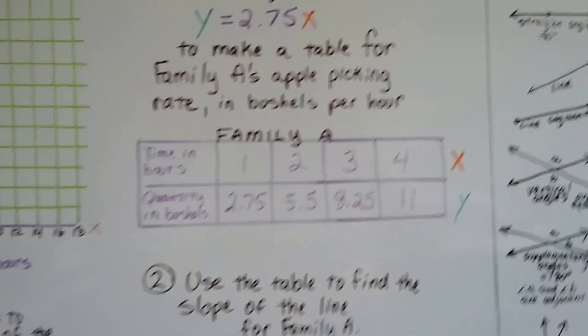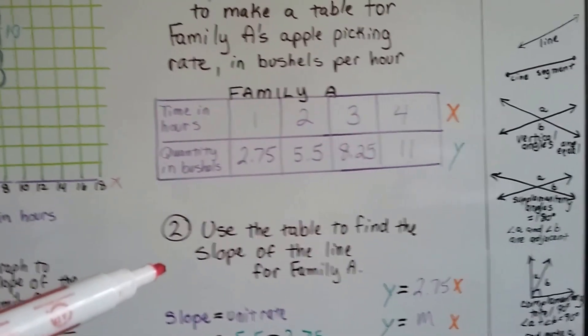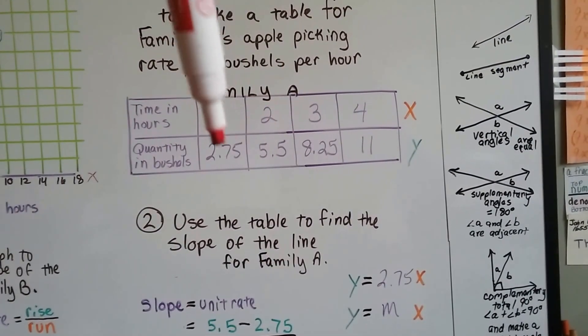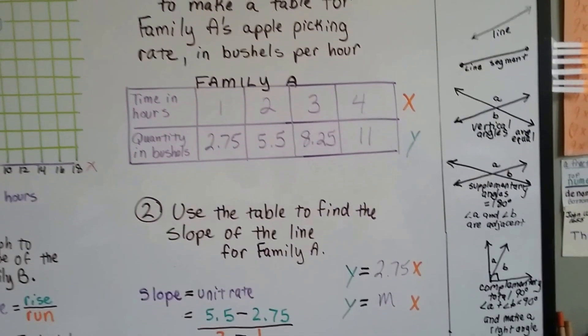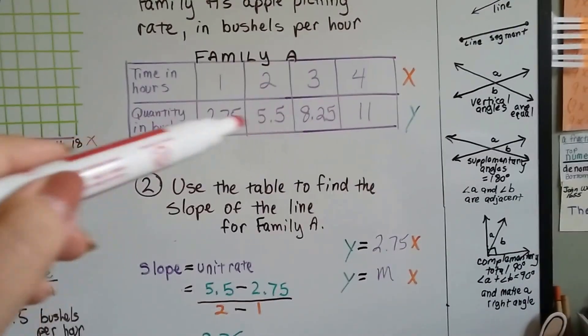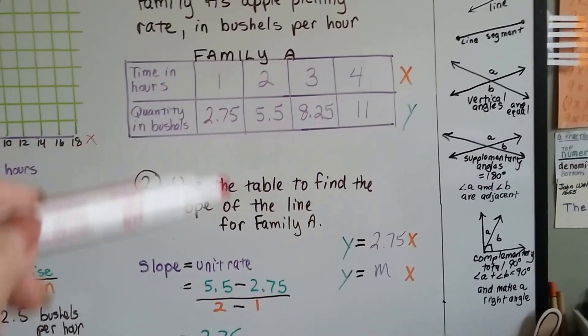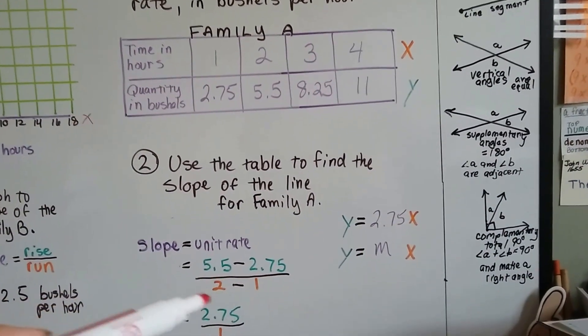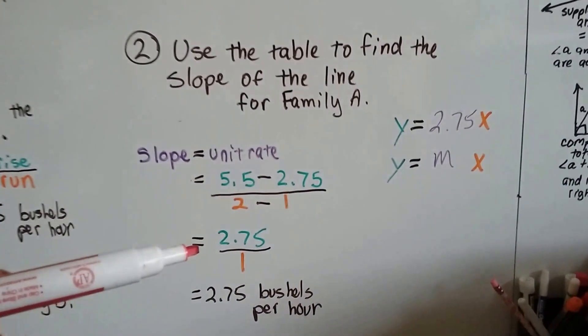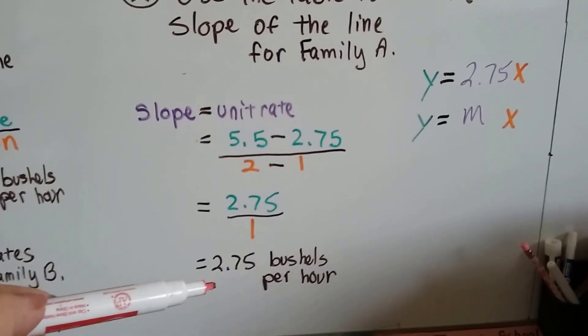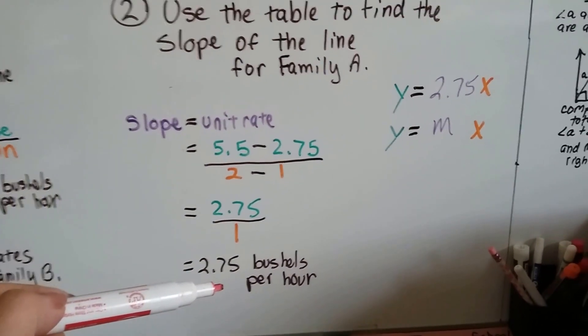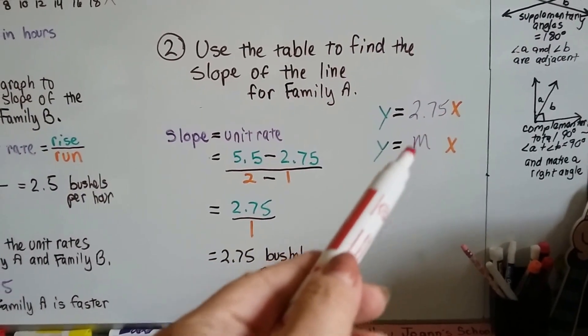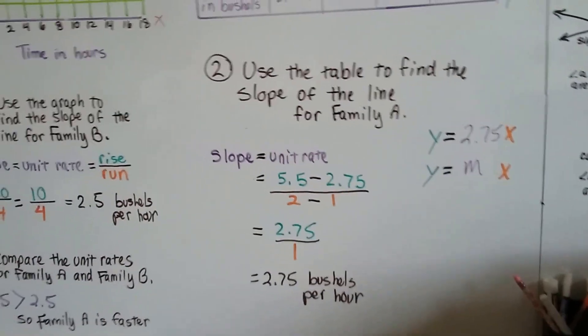So what we do is we use this table to find a slope of the line for family A. So we take the second values and we subtract these first values from the second values. So we've got 5.5 minus 2.75, that's right here, and 2 minus 1, that's right here. After we do our subtraction, we get our rise over our run. We come up with 2.75 bushels per hour. This 2.75 ends up being the slope, that's m.